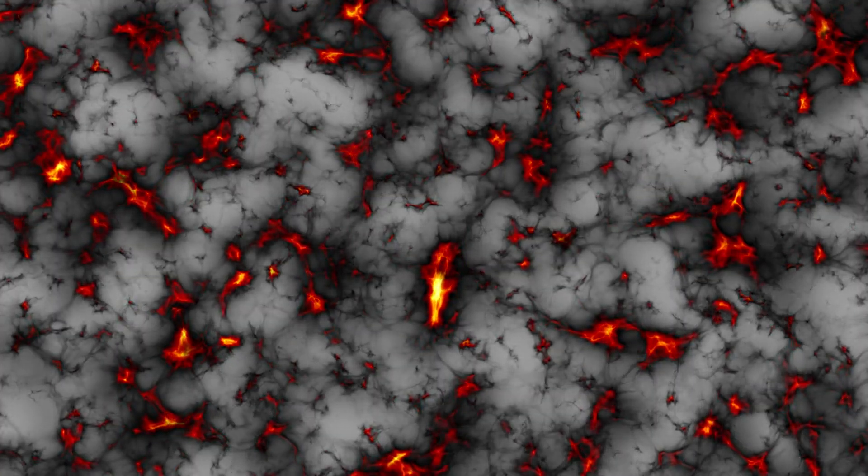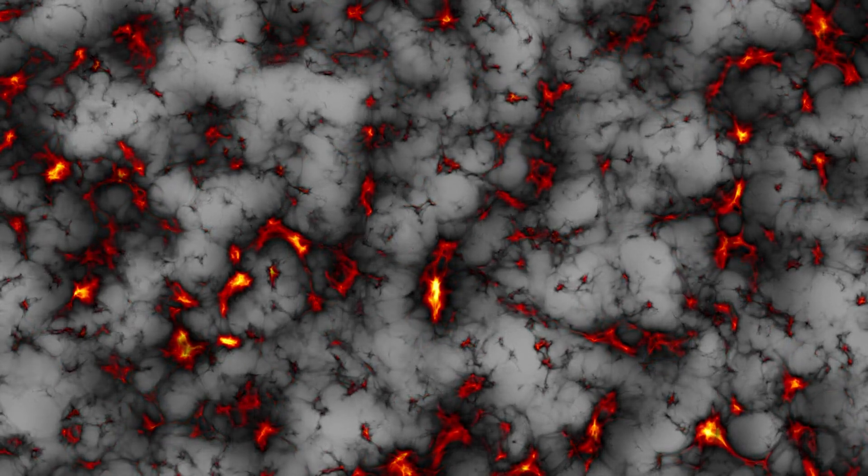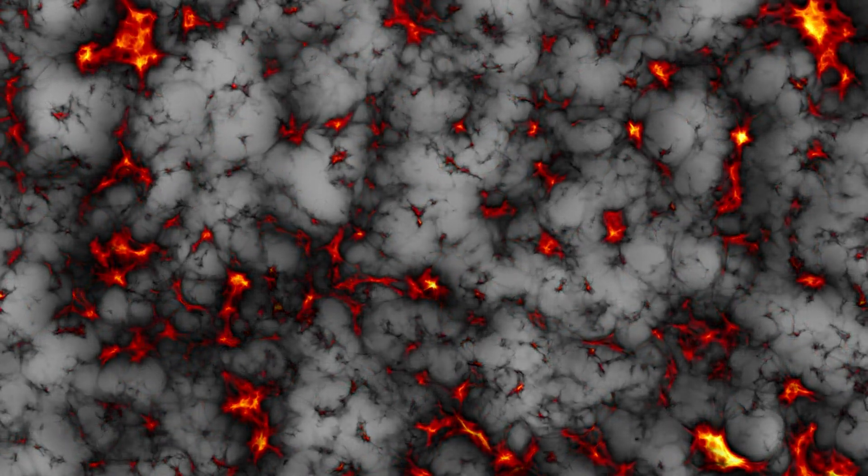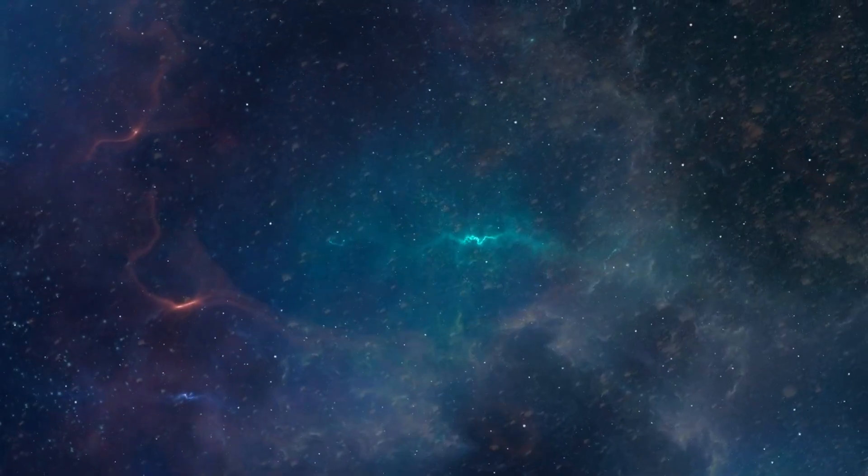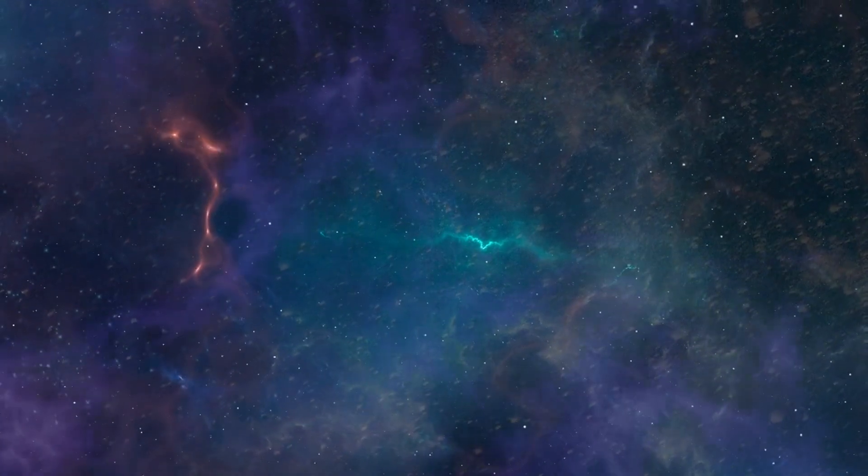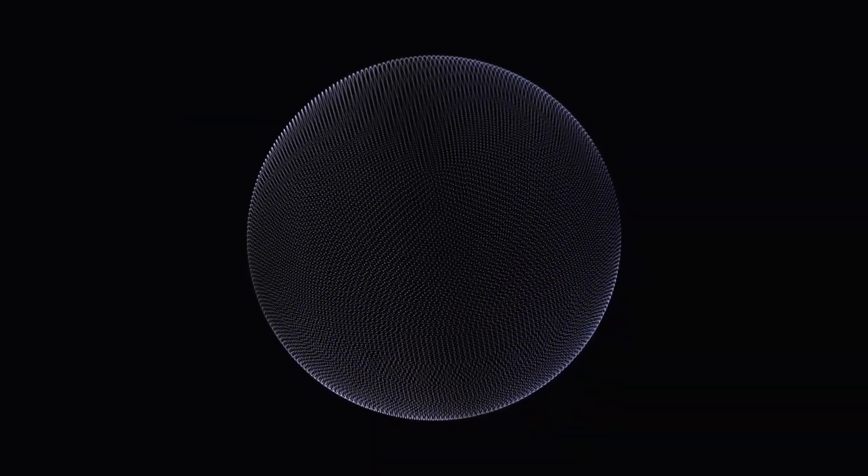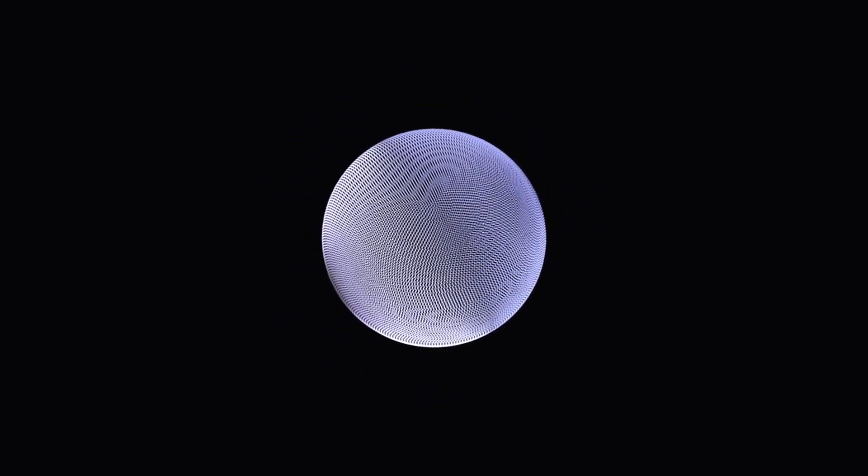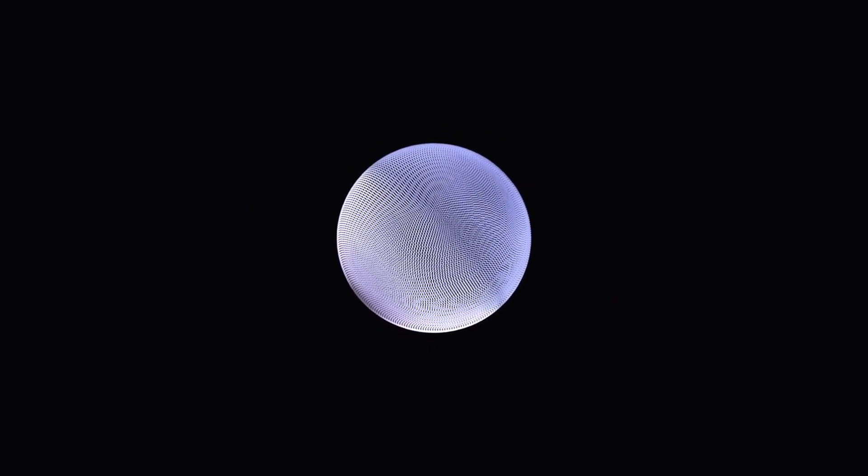The filaments and clusters are believed to have formed from the gravitational attraction of dark matter, drawing in regular matter to create the galaxies we see today. Meanwhile, the voids provide a contrasting emptiness, highlighting the vast and varied landscape of the cosmos. In summary, when we step back to view the universe at its grandest scale, we see a remarkable cosmic web, where dense filaments and clusters of galaxies are interspersed with vast, empty voids.